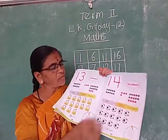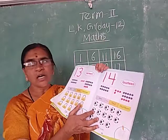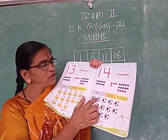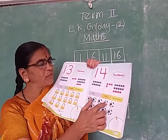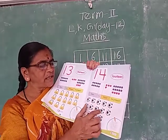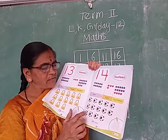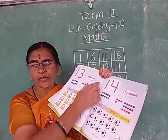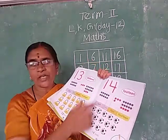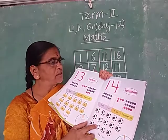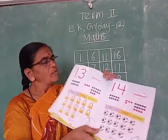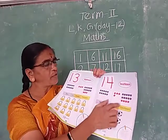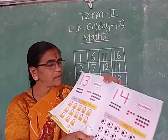Next number 14. How many balls are there? Count: 1, 2, 3, 4, 5, 6, 7, 8, 9, 10, 11, 12, 13, 14 — 14 balls. 10 and 4 makes 14.